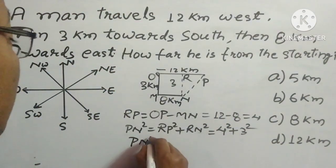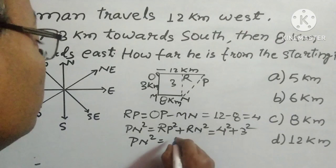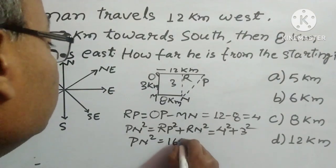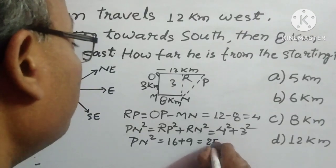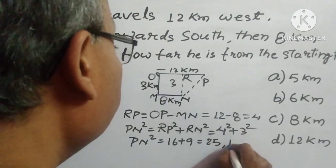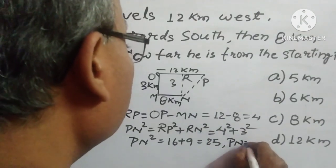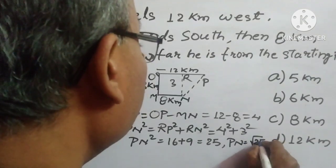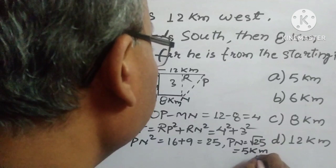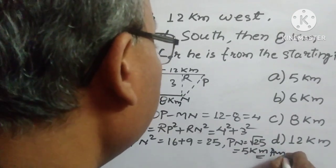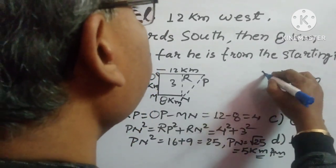So PN² = 4² + 3². PN² = 16 + 9 = 25. Therefore PN = √25 = 5 kilometers. So 5 kilometers is the answer, which is option A.